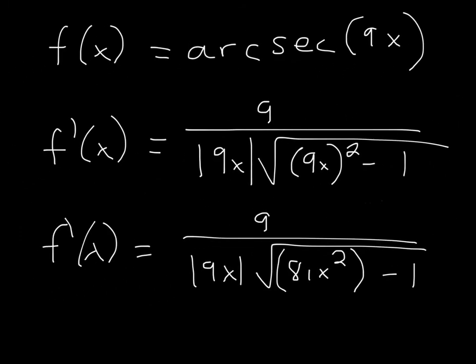And finally, all I did was simplify. 9 squared is 81, so you get 9 over the absolute value of 9x times the square root of 81x squared minus 1. That will be your final answer.